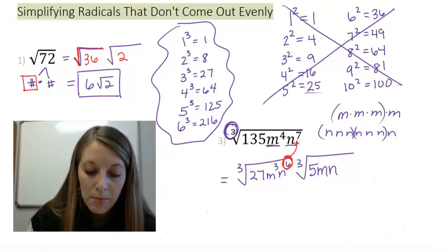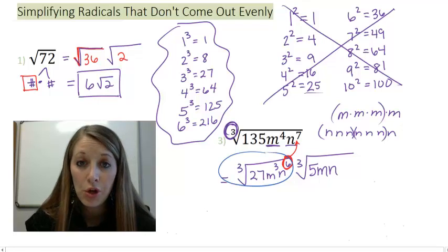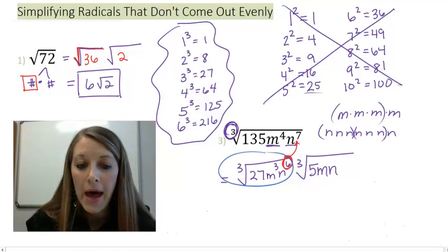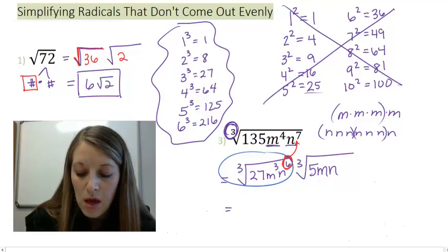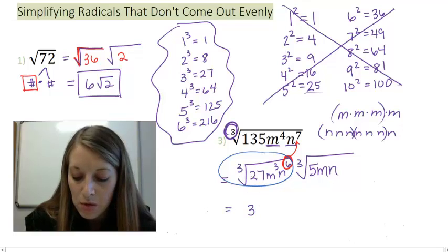So all of these numbers on my left should be cubes. Or they should be good pi. Which means I can finally break down or simplify the cubes. The cube root of 27 gives me 3. The cube root of m cubed gives me m. And the cube root of n to the 6 gives me n squared.